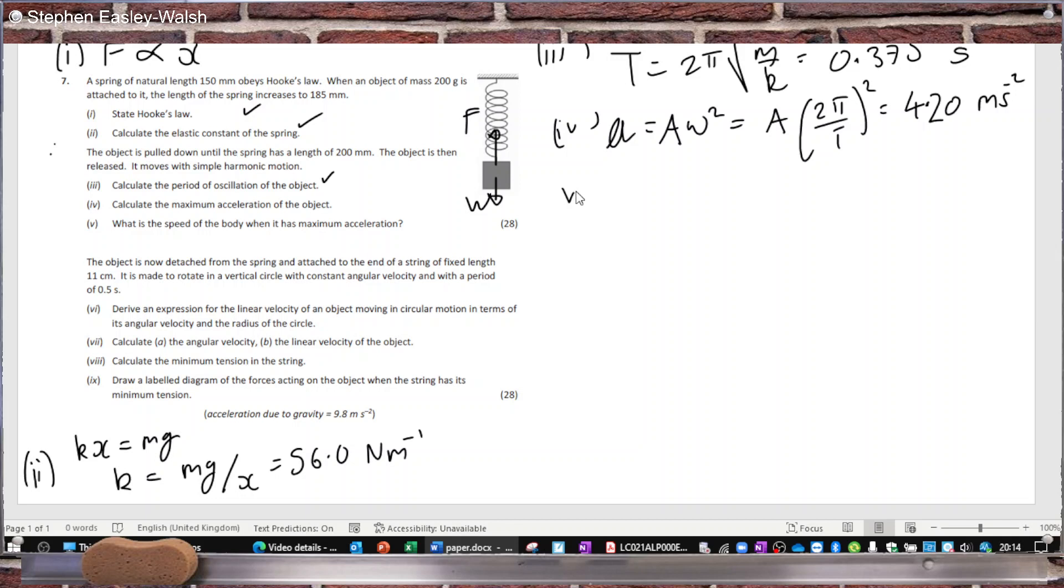Part 5: What's the maximum speed? What's the speed when it has maximum acceleration? It's 0.